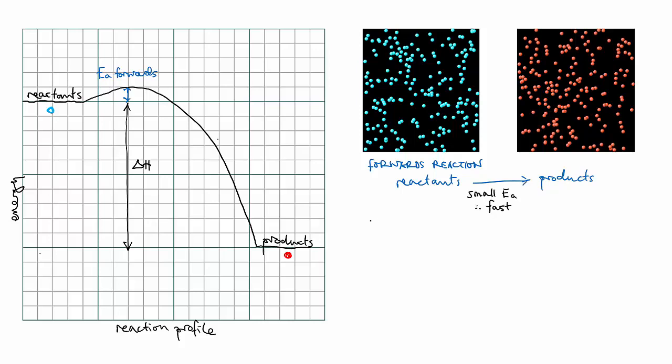If the reaction were reversible, it would mean that it could also proceed in the reverse direction. For this reaction, that would mean turning the reds back into the blues. But look at the energy profile in this direction.